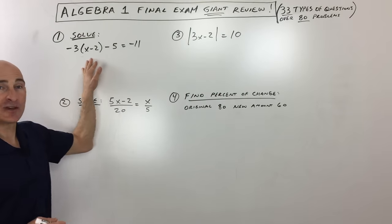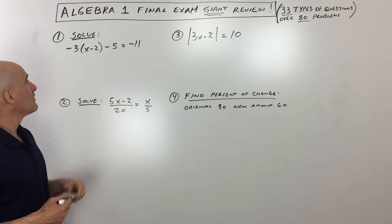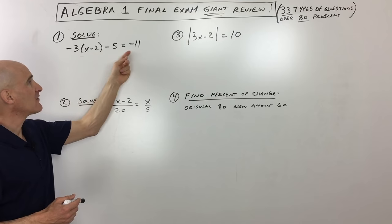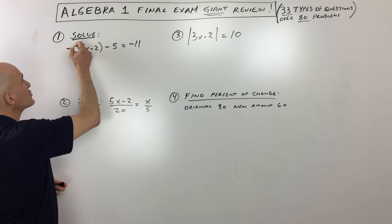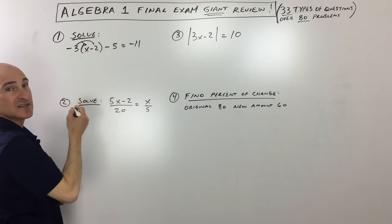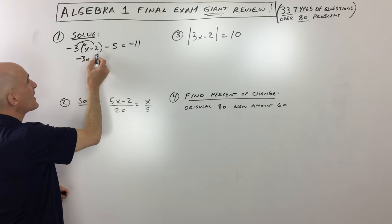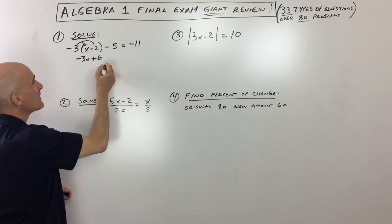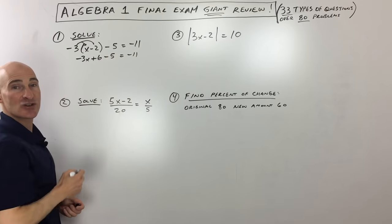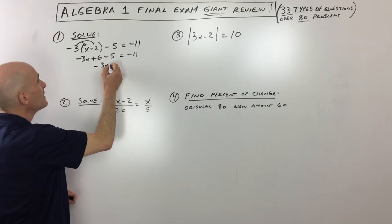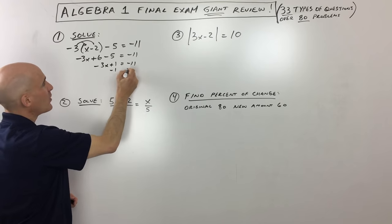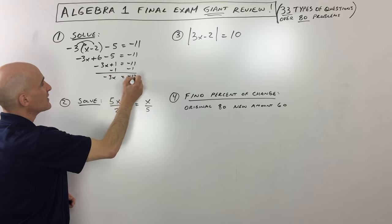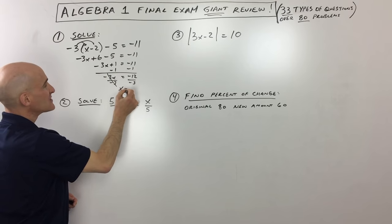The first question talks about solving an equation: negative 3 times x minus 2, minus 5 equals negative 11. What I would do is distribute this negative 3 into the parentheses. That gives us negative 3x, and negative 3 times negative 2 gives us positive 6, minus 5 equals negative 11. Combining like terms, 6 minus 5 is 1. Then subtract 1 from both sides: negative 3x equals negative 12. Dividing both sides by negative 3, we get x equals 4.